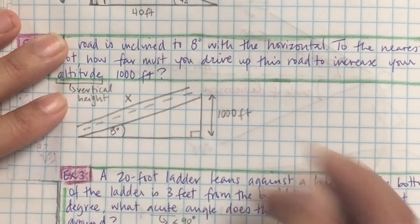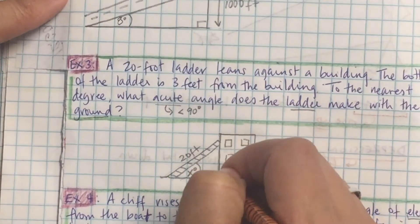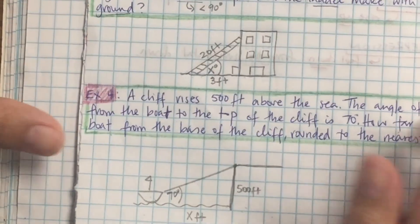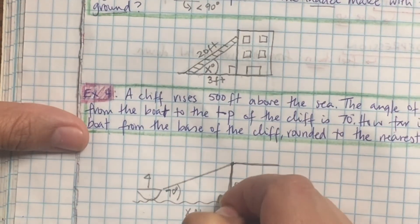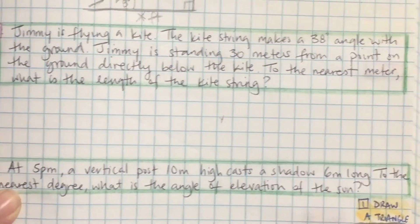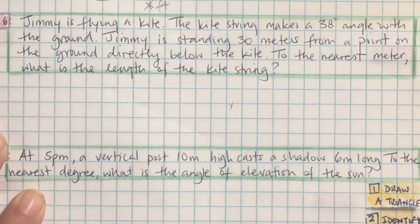Remember: you can't do any of these questions unless it's a right angle triangle. Pythagorean theorem and trig only work on right angle triangles, which means a triangle that has a 90 degree angle in it.